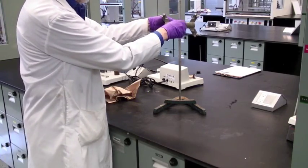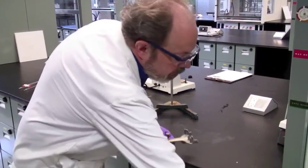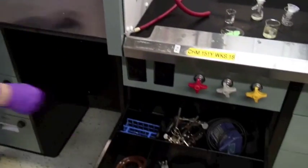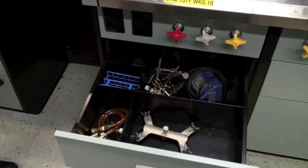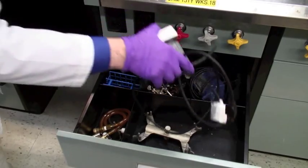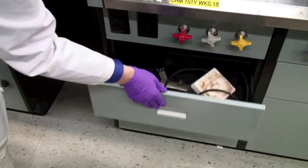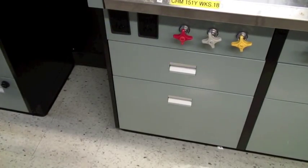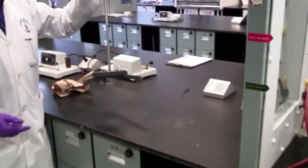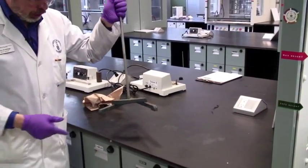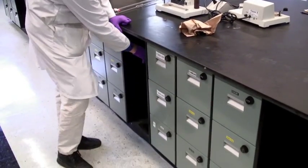The burette clamp, the butterfly clamp, goes into the drawer underneath along with any hot plate, and close that up because other people will be using that. The retort stand does not live here. It actually lives down here underneath.